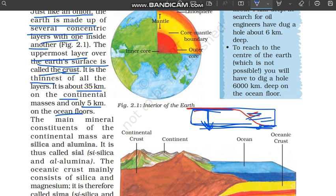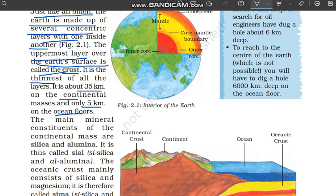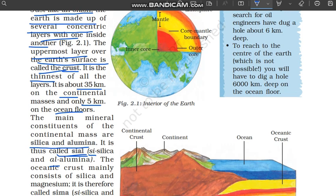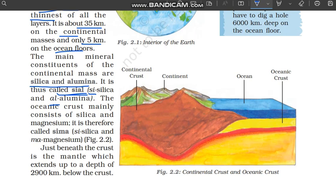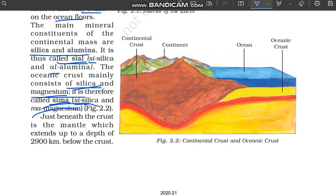Our continental masses are mainly made up of 2 minerals — silica and alumina. Si for silica and Al for alumina — together they form 'SIAL', which is why continental masses are also called SIAL. The oceanic crust mainly consists of silica and magnesium. So the oceanic crust — the 5 km crust below the ocean floor — is made of silica and magnesium, and is therefore called SIMA (SI for silica, MA for magnesium).